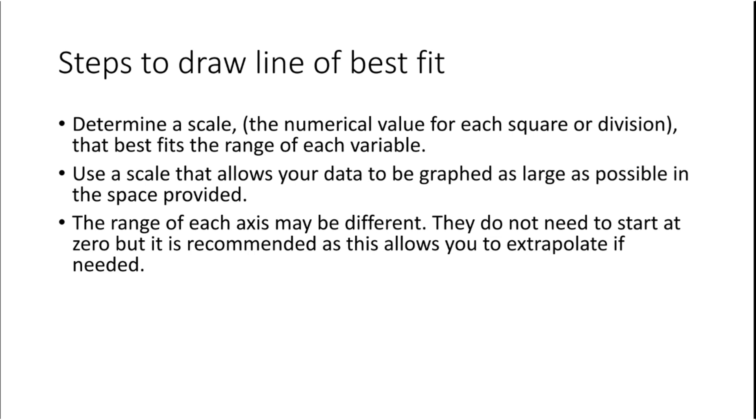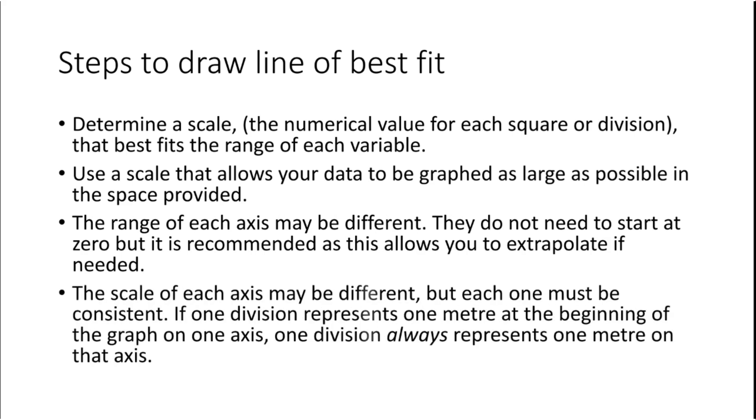The scale of each axis may be different, but each one must be consistent. Consistent means if one division represents one meter at the beginning of the graph on one axis, one division always represents one meter on that axis. On the same axis there should not be change. Next, identify a trend or a relationship between the independent and dependent variables.